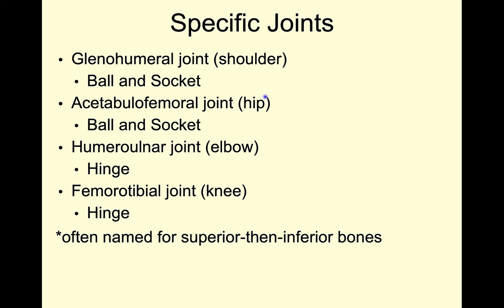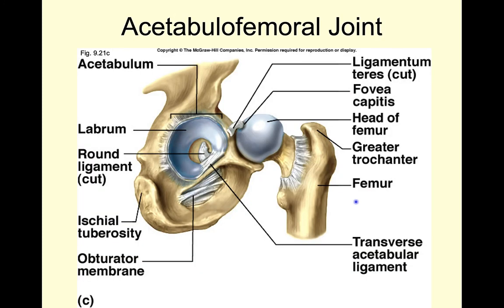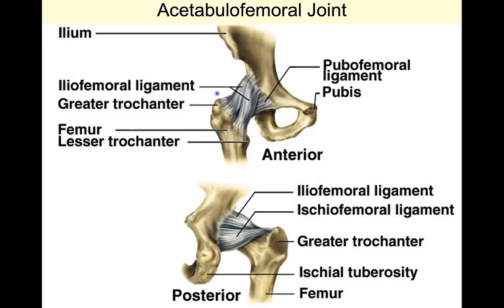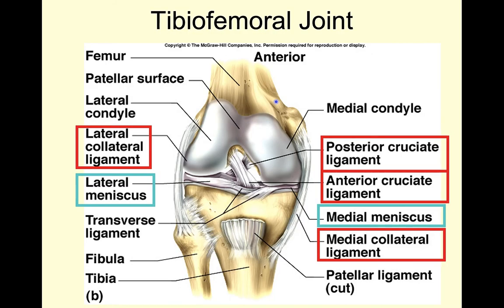Some specific joints you'll need to know are the glenohumeral joint, the acetabulofemoral joint, the humeroulnar joint, and the femoraltibial joint. A closer look at our acetabulofemoral joint: you can see we have ligaments holding the head of the femur into that acetabulum, with a little bit of a labrum to help reduce friction. If we zoom out, we can see some ligaments helping to hold that bone in place. You will not be responsible for any of these specific ligament names — it's mostly here to show you what this looks like.